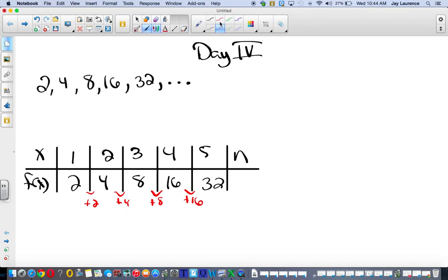There's another way to change 2 to 4, and that's to multiply it by 2. 4 times 2 is 8, and 8 times 2 is 16. When the differences are being multiplied by a constant, this is an exponential function.